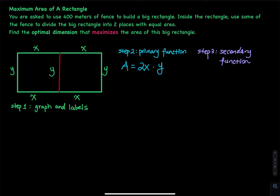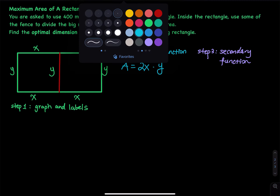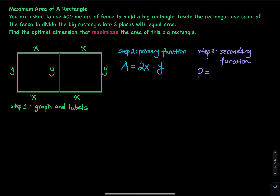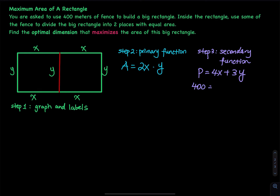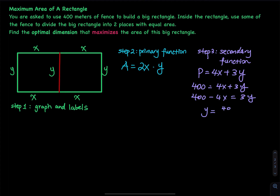Other than this, we have 400 meters of fence — that is for the perimeter. What is the perimeter of this rectangle? We have 4x and 3y, so that is 4x plus 3y, and that equals 400. Let's isolate y on one side: 400 minus 4x equals 3y, then divide both sides by 3. We have y equals (400 minus 4x) divided by 3.